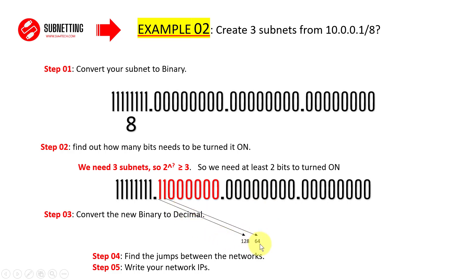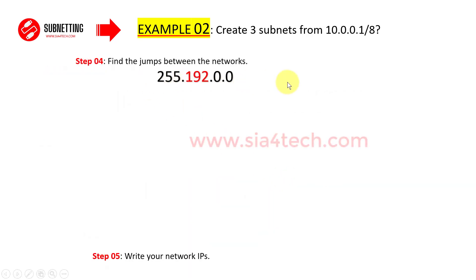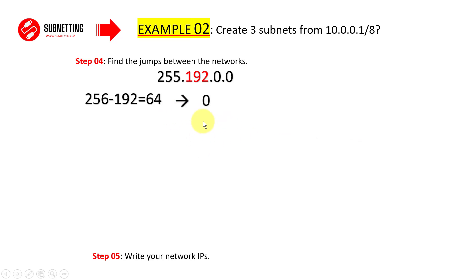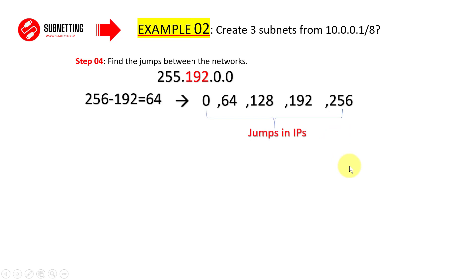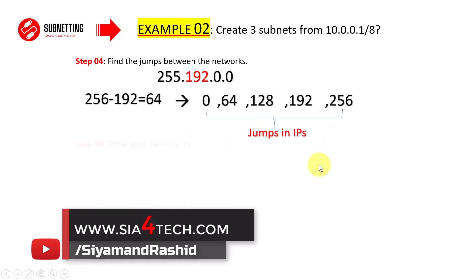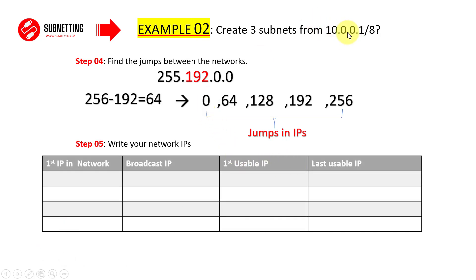Step three: convert the new binary to decimal. With two bits on in the second octet: 128 plus 64 equals 192, so the new subnet mask is 255.192.0.0, or /10 in CIDR. Step four: find the jumps. 256 minus 192 equals 64, so the jump is 64. The first network starts at 0, second at 64, third at 128, fourth at 192, and 192 plus 64 equals 256. Now let's write the IPs in a table — this time the second octet is highlighted.